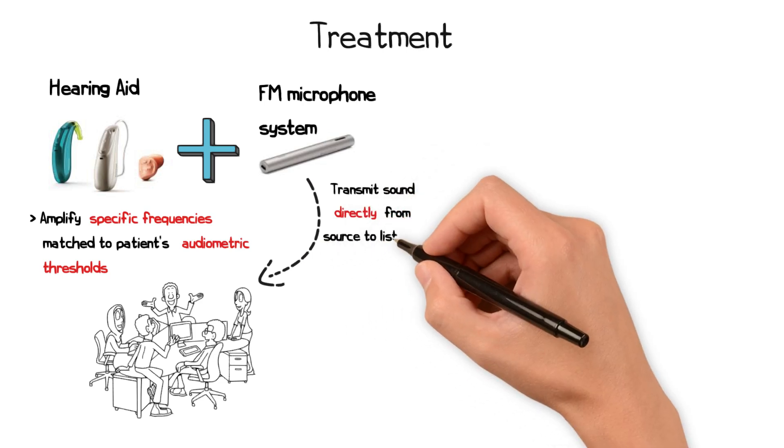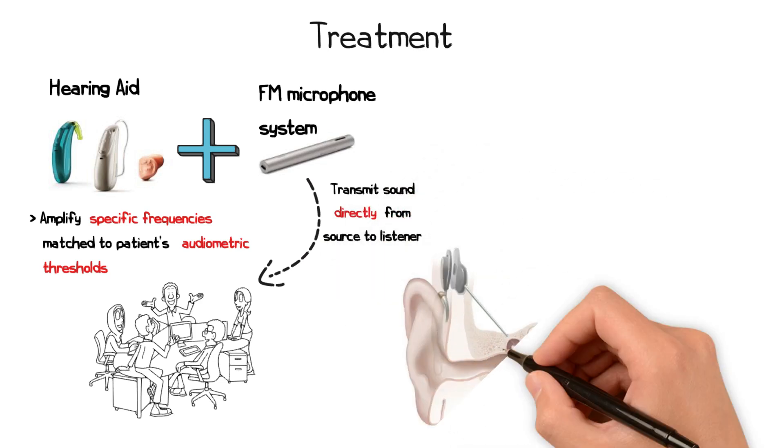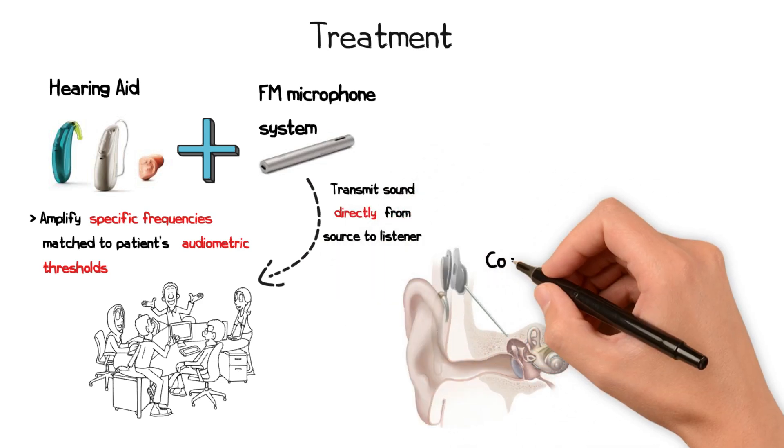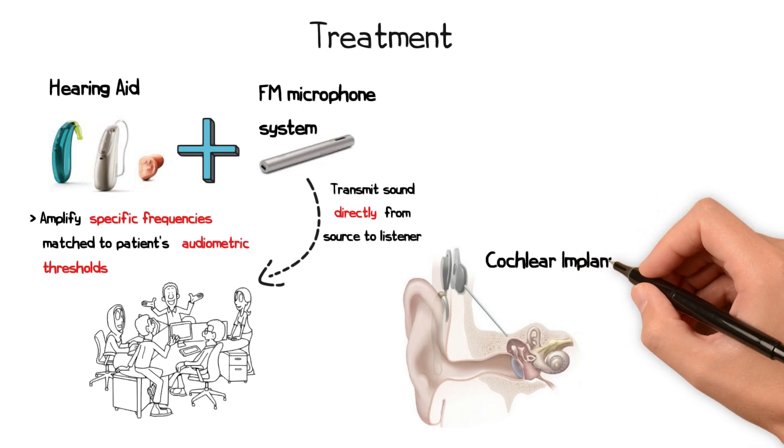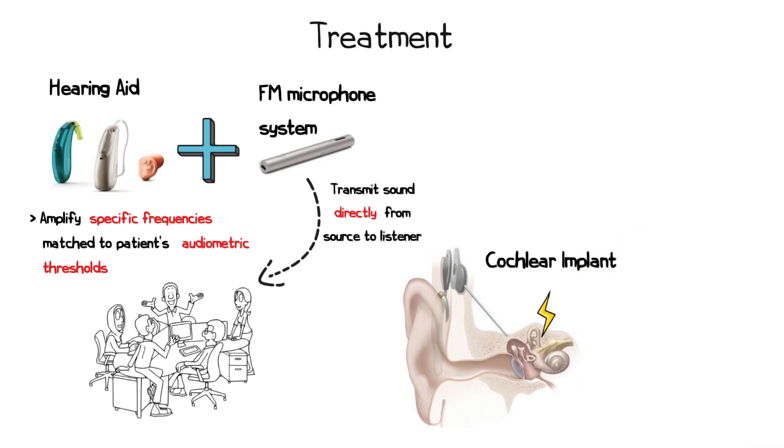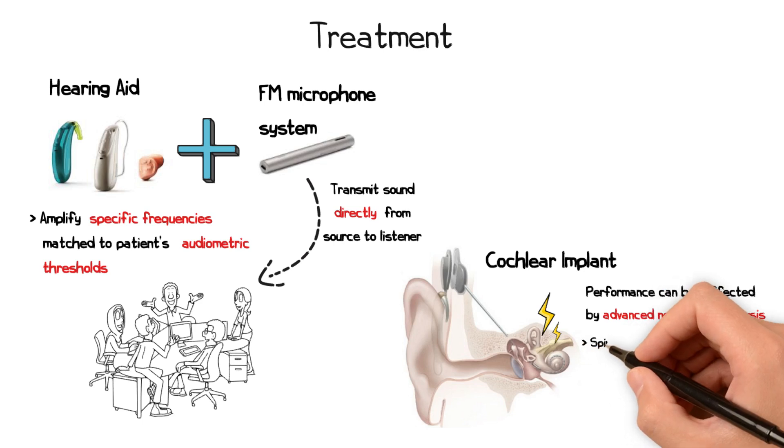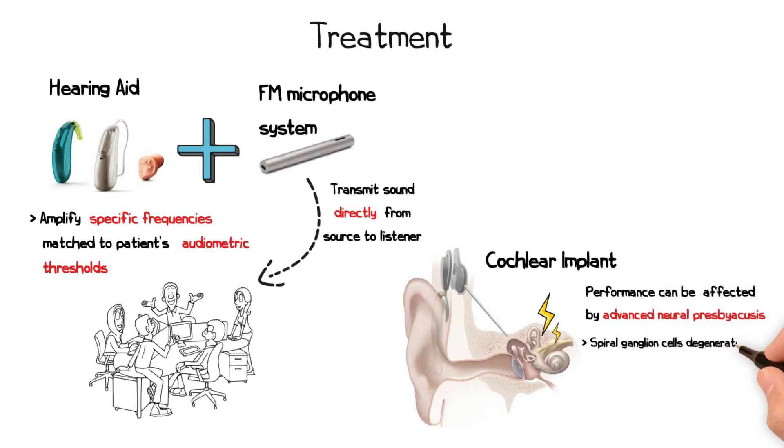For those with profound hearing loss not benefiting from hearing aids, cochlear implants are an option. These devices bypass the damaged portions of the ear and directly stimulate the auditory nerve. However, in cases of advanced neural presbyacusis, if the spiral ganglion cells in a particular region of the cochlea have degenerated, cochlear implant electrodes targeting that region may be ineffective because there are no functional neurons to stimulate. This may impair their hearing performance despite implantation.